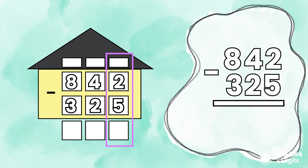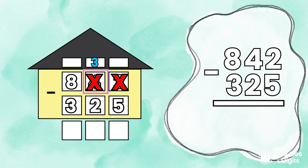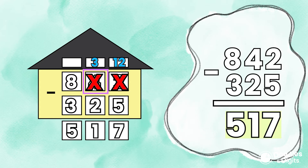I actually need to borrow from the tens place. In the tens place is a 4, and we're going to borrow one group of 10, so that 4 will turn into a 3. We're going to take that group of 10 and add it to the ones place, so instead of 2, it's going to be 12. 12 minus 5 equals 7. Then we'll go to the tens place: 3 minus 2 equals 1. And finally, 8 minus 3 is 5. So our answer is 517.